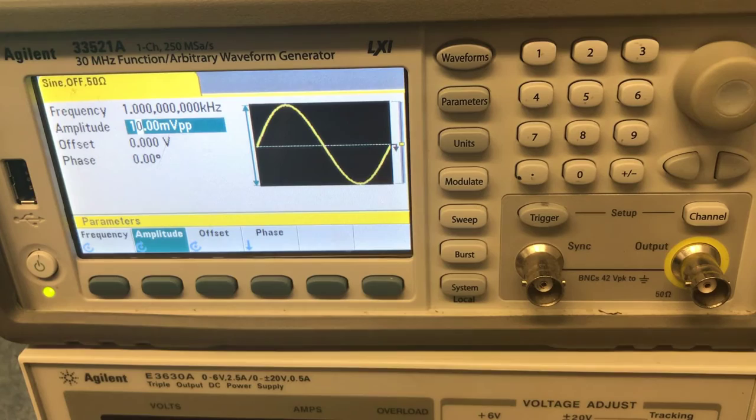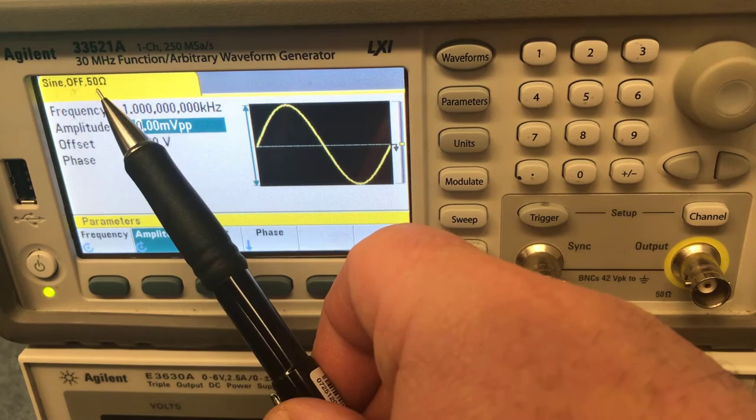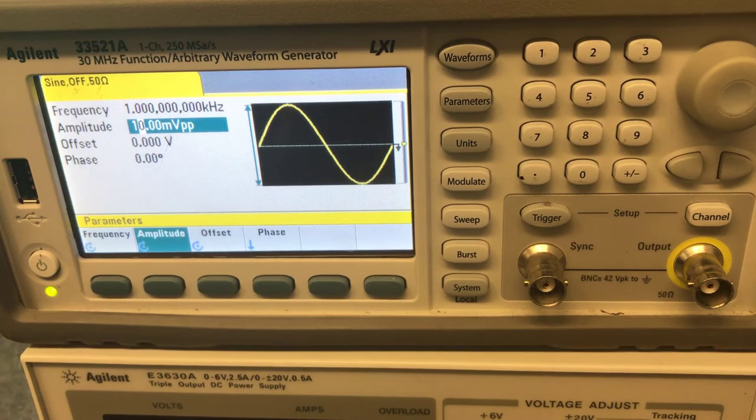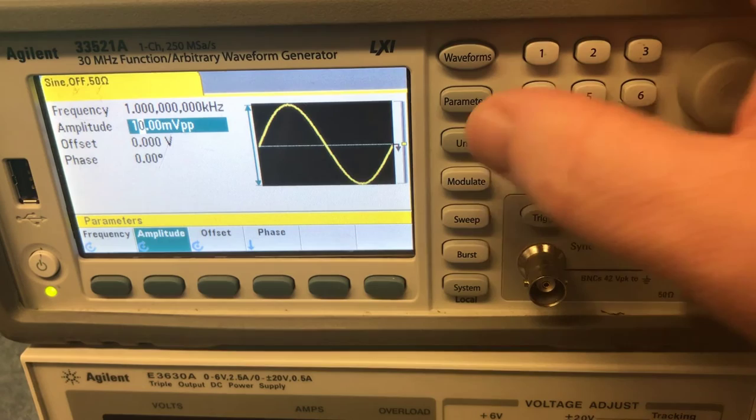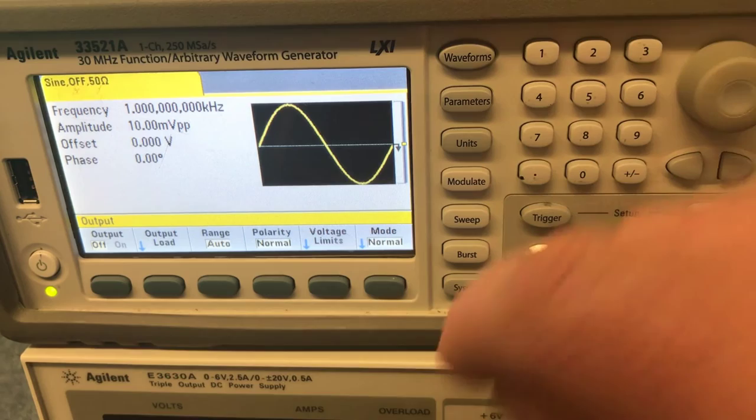Now, up here at the top, you'll notice that I said that we were happy about the fact that it says sine. We're not happy about the fact that it says 50 ohms. What that means is that you're actually going to be outputting twice as much voltage as you expect. For reasons that are not relevant for today, we need to adjust that 50 ohms.